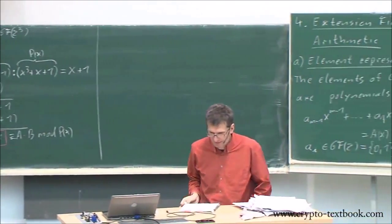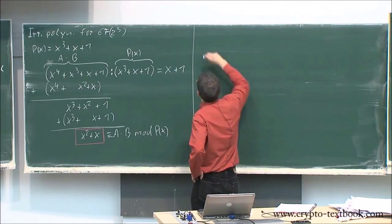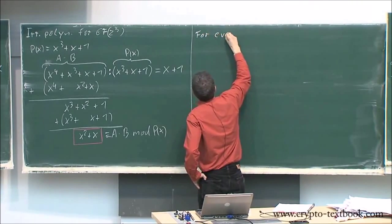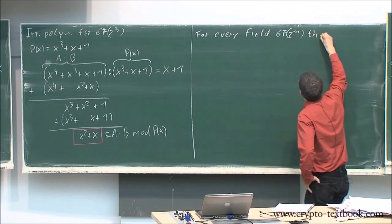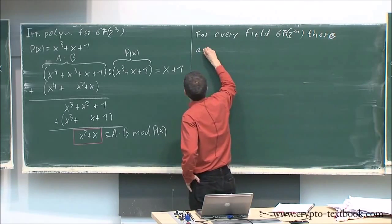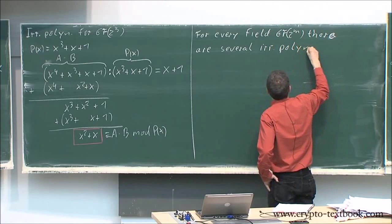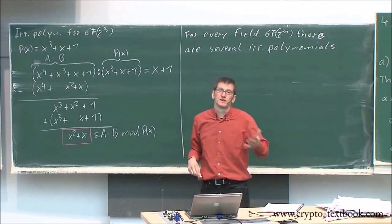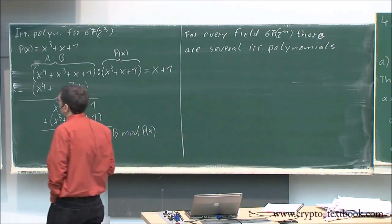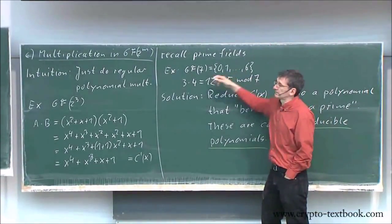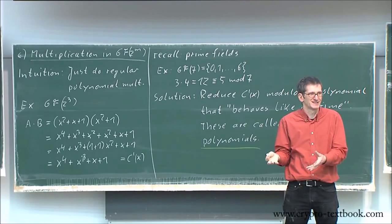One question that might come up: where do I get this polynomial from? For every field GF(2^m), there are several irreducible polynomials — more than one, which is unusual and different from prime fields. For GF(7) there is obviously only one prime, seven. But here for GF(2^3), for instance, this is one irreducible polynomial, and I believe there is another irreducible polynomial as well.